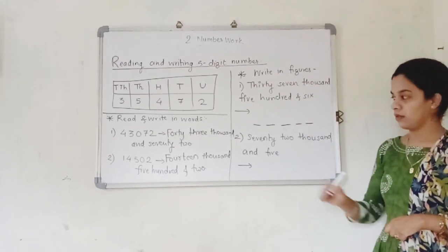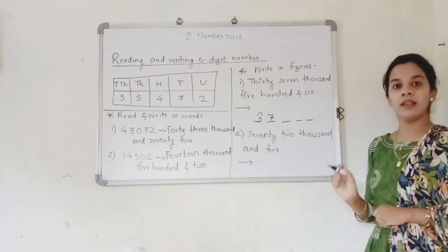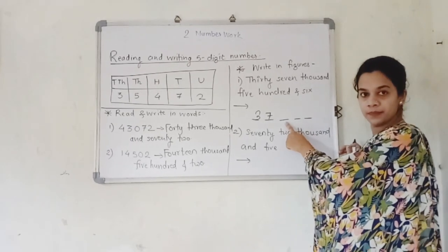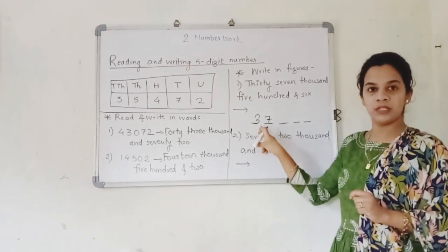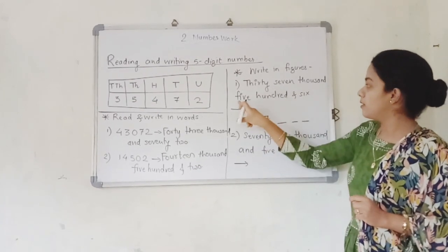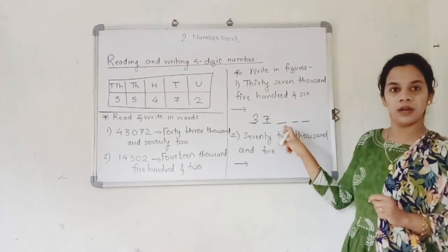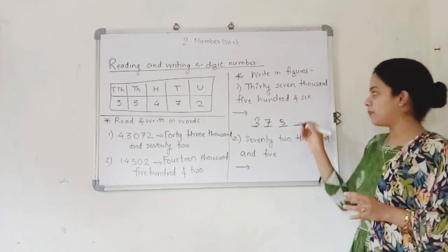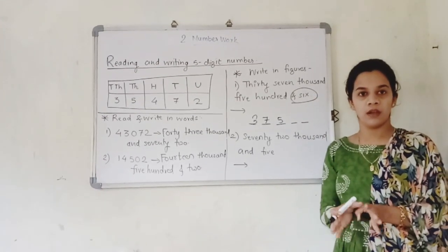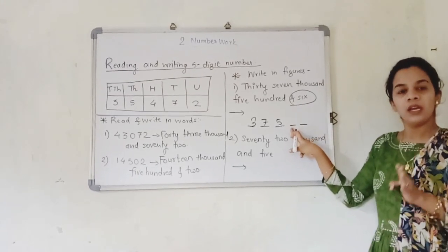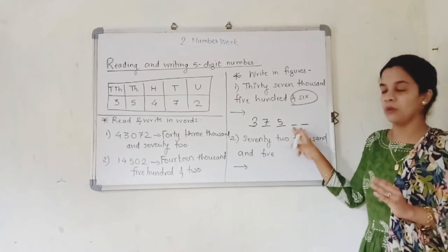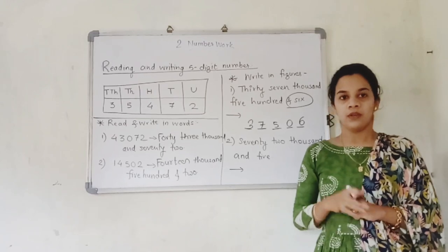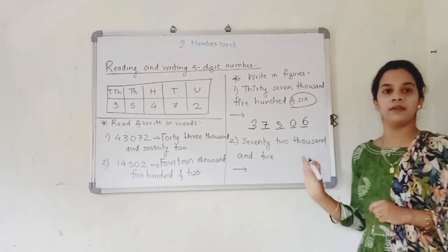37,000 — I am supposed to fill 5 places. We know this is the hundreds place, this is the thousands place, and this is the ten-thousands place. These two places are already filled by 37. It is 37,506, so 500 will come near the hundreds place. And 6 — is 6 at the tens place? No, 6 is at the unit place, so the tens place will be filled by 0. So this is 37,506.